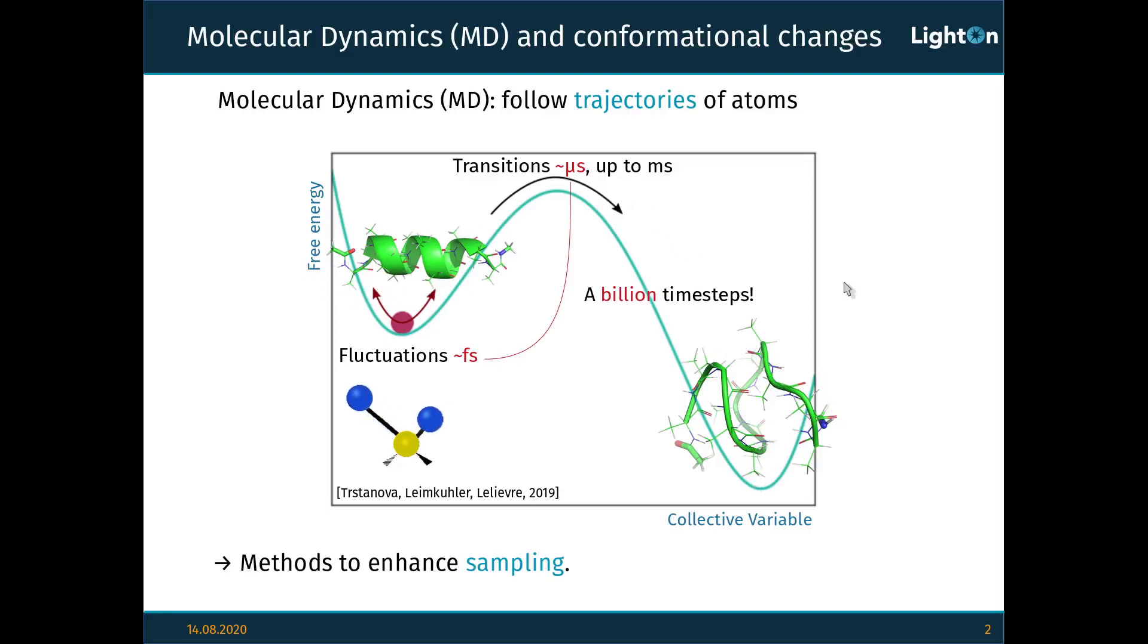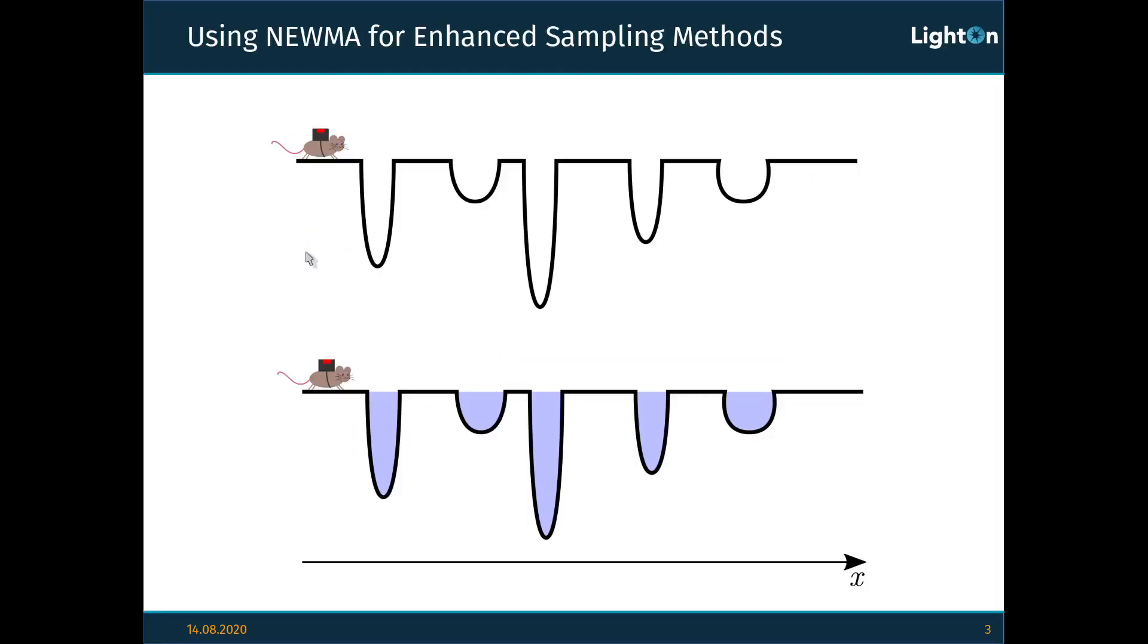However, chemists are interested in large-scale transitions which are also called conformational changes and typically occur on scales of the microsecond up to the milliseconds. That means we need to take more than a billion time steps in order to observe one of those transitions. Because of that, methods have been developed to enhance sampling, that is the exploration of all the different shapes a molecule can take, as well as the energy associated with this molecule.